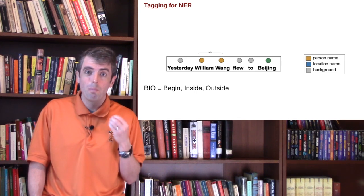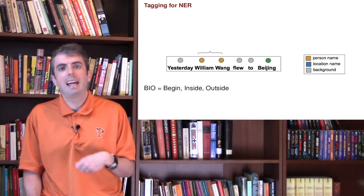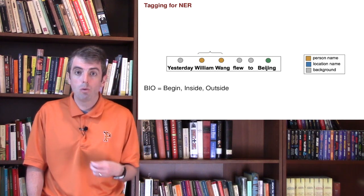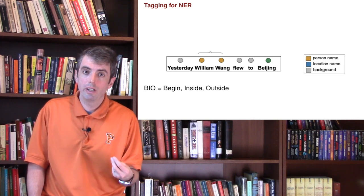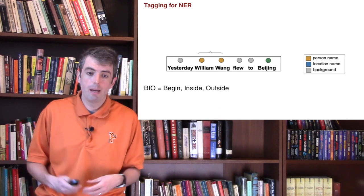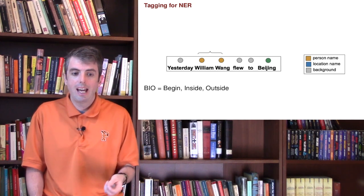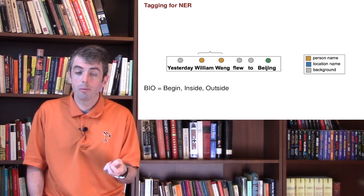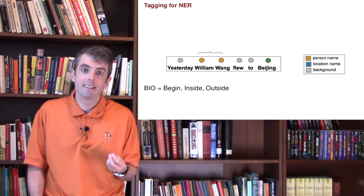How do you do that? You use what's called BIO-tagging. You have three types of tags: beginning tags, inside tags, and outside tags. So William would be a beginning tag, and Wong would be an inside tag. Once you've seen William, if it's followed by an inside tag, then William Wong is the whole name of a person. Beijing would have just the beginning tag for location, William the beginning tag for person, and Wong the inside tag for person. Each type of entity has its own beginning and inside tags, and everything else gets labeled as outside.